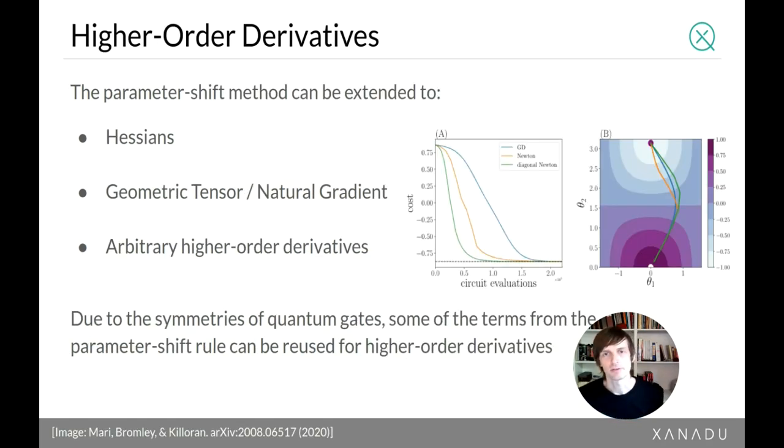So when we're talking about derivatives, it's sometimes interesting to consider what happens with higher order derivatives as well. So the parameter shift method is pretty generic and it allows you to not only compute derivatives and gradients, but higher order derivatives as well. So sometimes for optimization, it's important to take into account the curvature of your optimization landscape. So you want to compute things like the Hessian matrix, the geometric tensor, or the natural gradient, or Fisher information matrix, these kind of things. And in general, the parameter shift rule can actually be extended to arbitrary higher order derivative tensors.